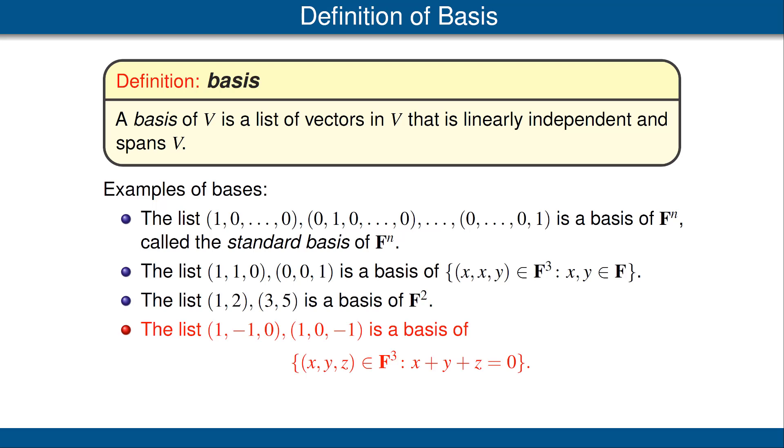Here's another example. We now consider the subspace of F³ consisting of those vectors whose three coordinates add up to 0. The list of two vectors shown here is a basis for this subspace of F³. The reason for that, again, is that these vectors are linearly independent and they span the space, as we'll see later.